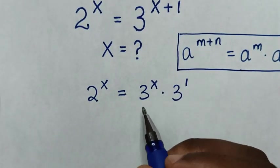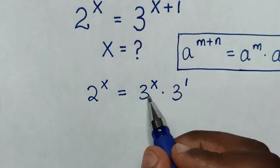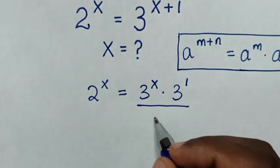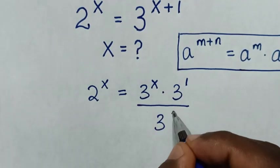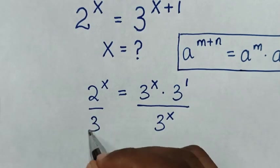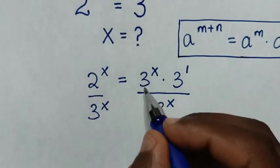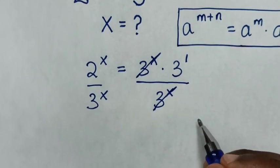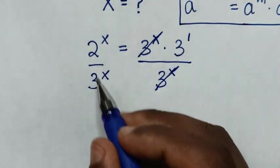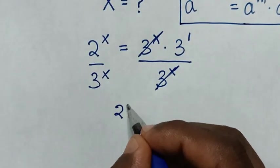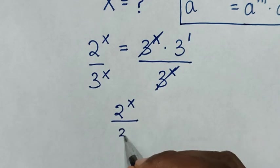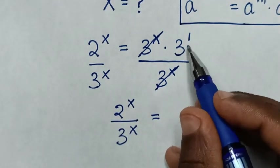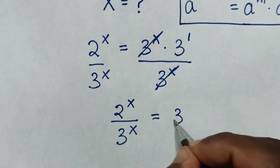In the next step, we make the like terms of exponent with power of x on one side, so we'll divide by 3 power of x on both sides. This 3 power of x will cancel with this 3 power of x. Then it will be 2 power of x over 3 power of x is equal to 3 power of 1, which is the same as 3.